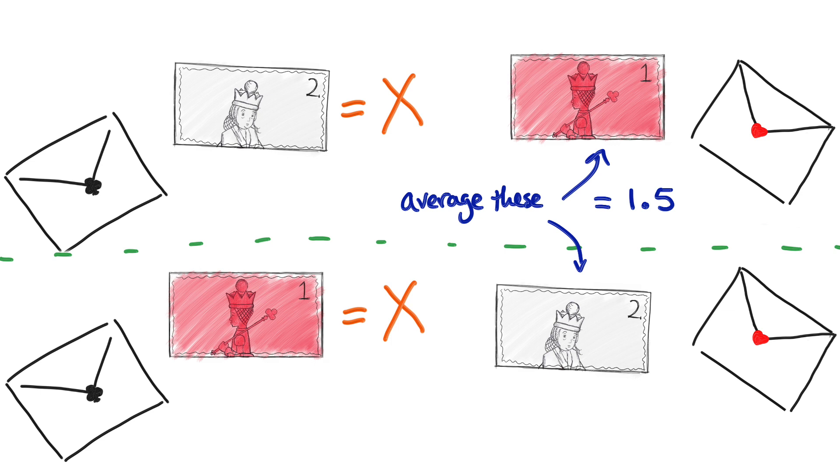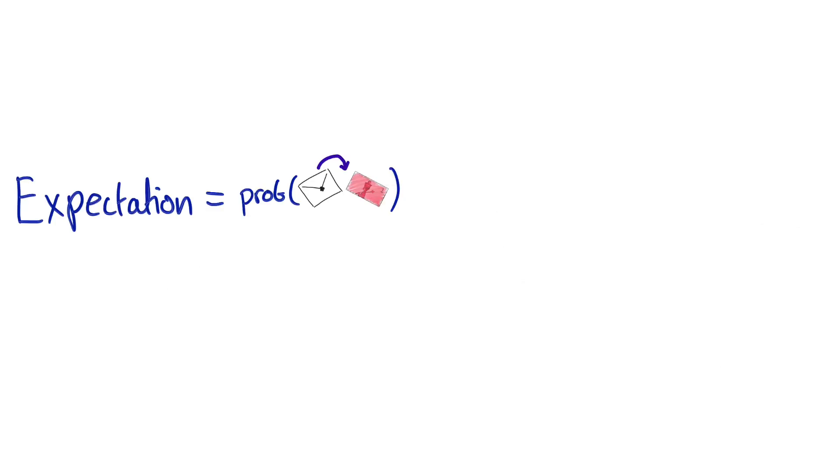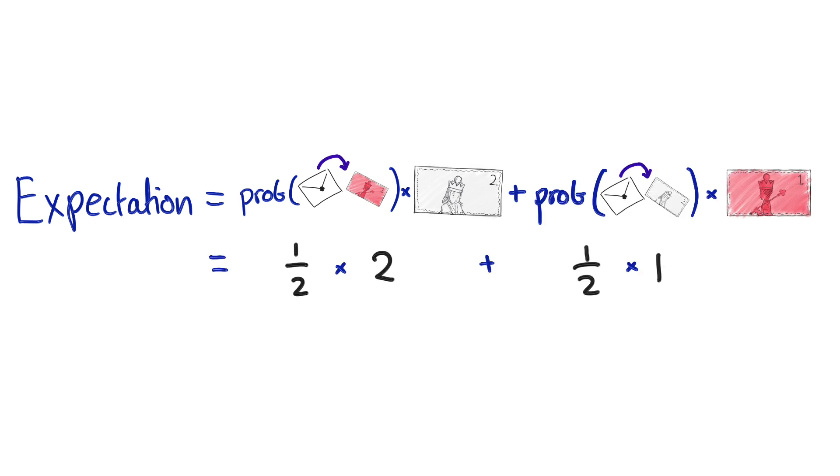More formally, the expectation value of the second envelope is the probability that your x is 1, times the amount in the other envelope if that is the case, plus the probability your x is 2, times the amount in the other envelope if that's the case. Since the expectation value is exactly what you'd expect now, you shouldn't bother swapping.